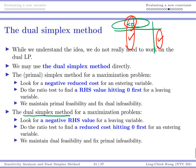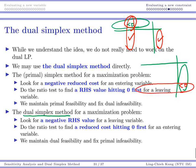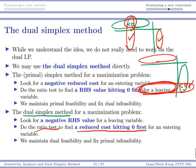In the dual simplex method, we no longer look at reduced costs. Instead, we look for a negative number on the right-hand side — that's the problem to fix. The row with a negative right-hand side value is the leaving variable's row. We then find an entering variable by doing a ratio test: the values in the objective row are numerators, and the values in the leaving row are denominators. We find the reduced cost that first hits zero — that becomes our entering variable. This maintains dual feasibility and fixes primal infeasibility iteration by iteration.